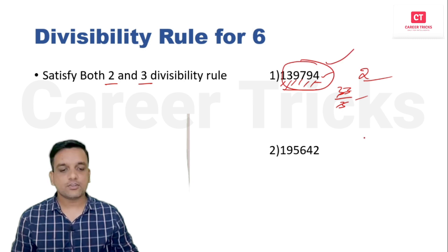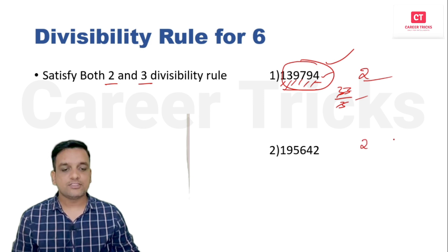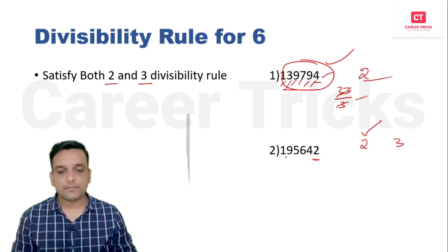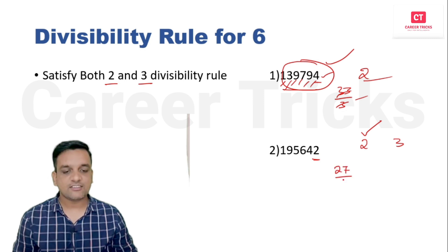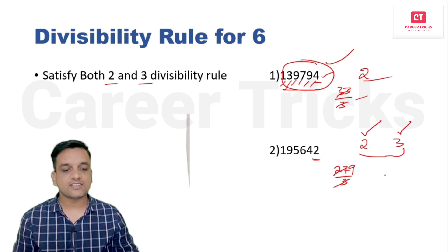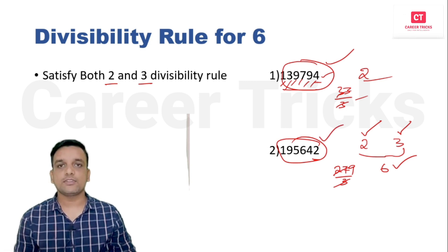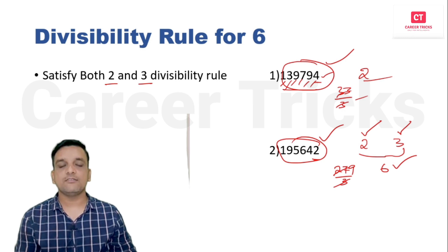For a second example: unit digit is 2, which is even — rule 2 satisfied. Sum of digits: 1 + 9 + 1 + 6 = 27. Is 27 divisible by 3? Yes — 3 × 9 = 27. Both rules 2 and 3 are satisfied, so this number is divisible by 6. Remember: for divisibility by 6, both rule 2 and rule 3 must be satisfied.